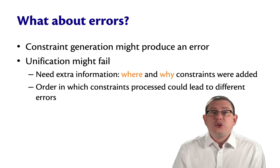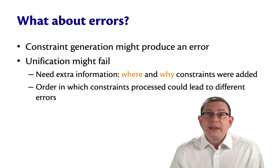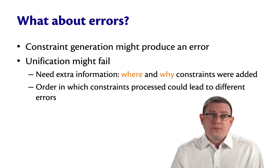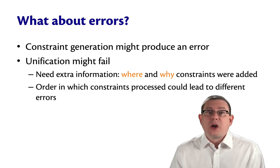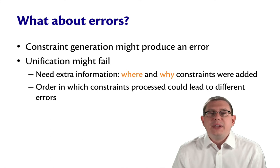They might arise during constraint generation. A place we've seen that already is if we use the name rule and can't find the name in the static environment. At that point, it's pretty easy to stop type inference and tell the programmer, hey, there's an unbound name here.